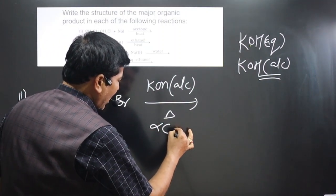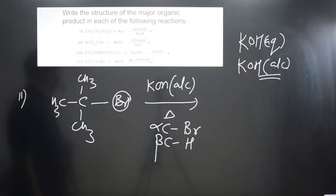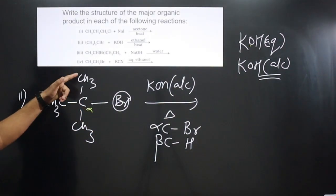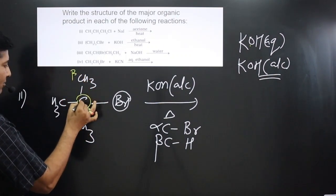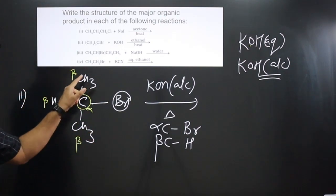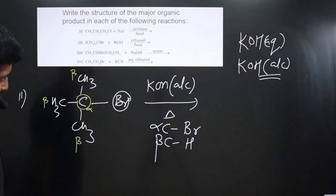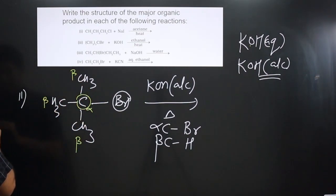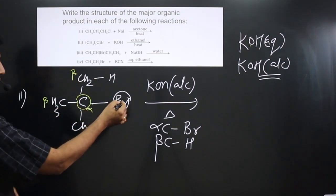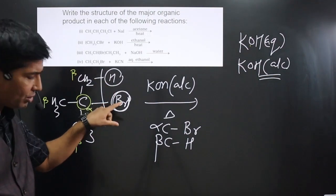Since we have alcoholic KOH, we carry out an elimination reaction. In elimination, from the alpha carbon we remove the halogen (Br), and from the beta carbon we remove hydrogen — this is called dehydrohalogenation. The carbon bearing Br is the alpha carbon, and the adjacent carbon is the beta carbon. Since all three beta carbons are equivalent CH₃ groups, only one product is possible.